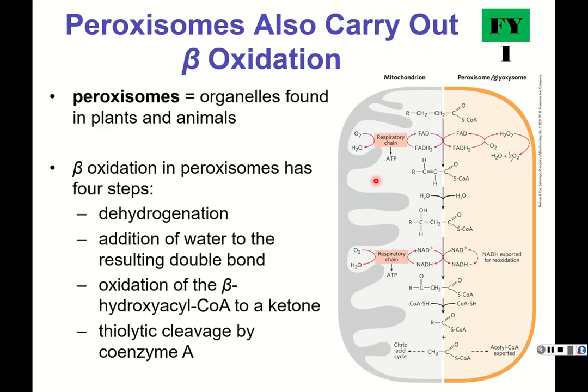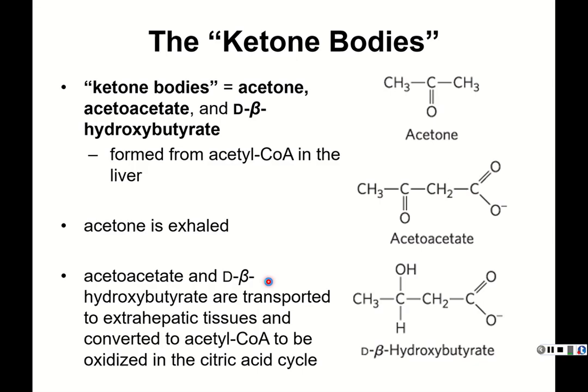Beta oxidation also occurs in peroxisomes and, in plants, in glyoxysomes — not just mitochondria. The process is similar in almost every fashion except that in peroxisomes, the NADH generated in step 3 cannot be re-oxidized directly in a respiratory chain, so it must be exported for re-oxidation elsewhere.